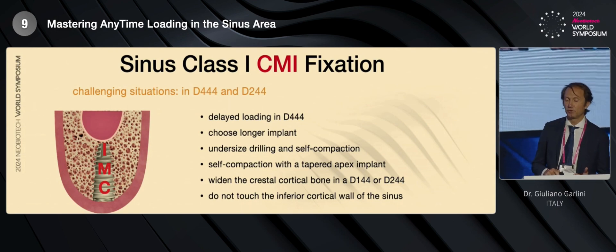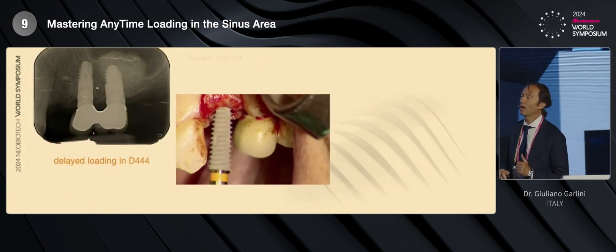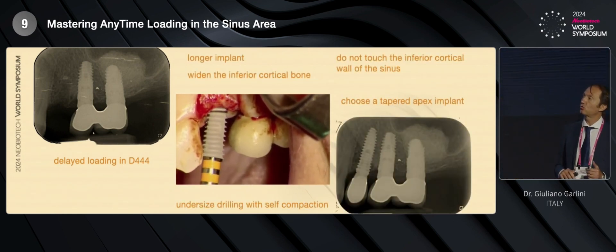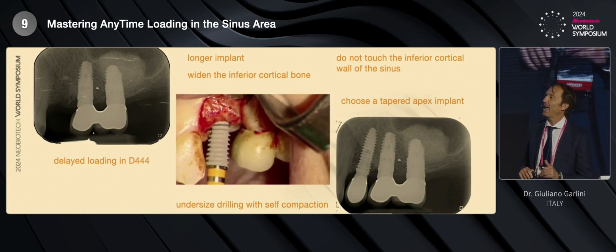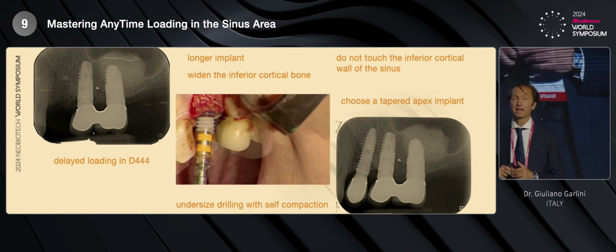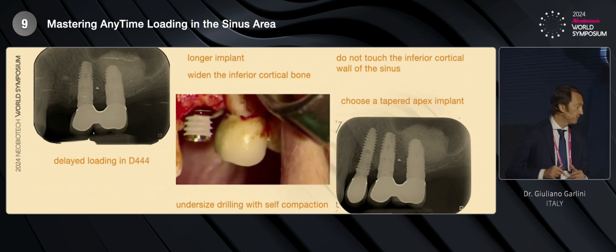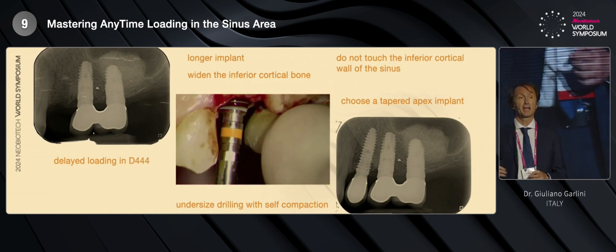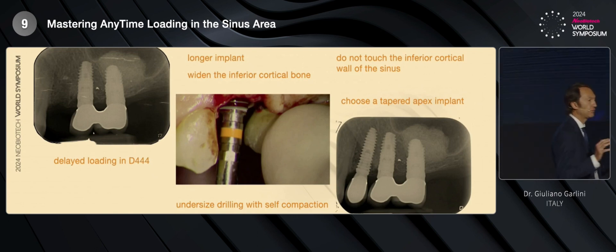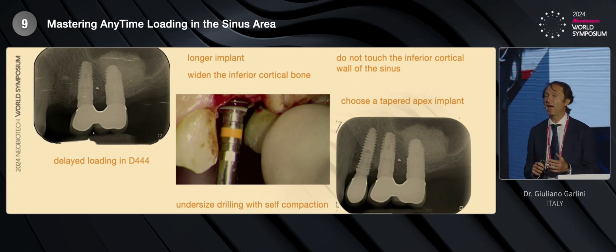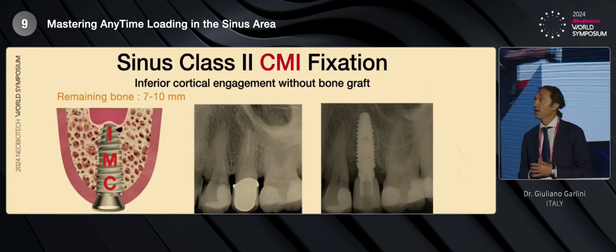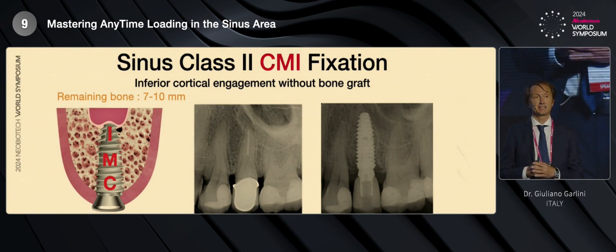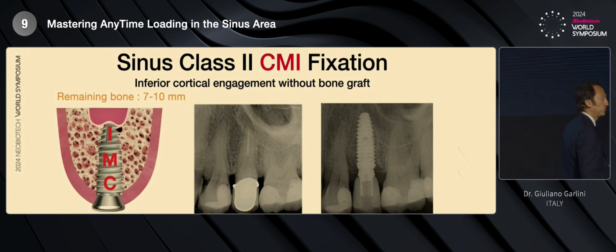So, as I told you before, this is not such an easy situation to treat with immediate loading, with any time loading. And for example, this premolar must be inserted into the premolar area which is already healed, and we have D44 bone — a very bad quality of bone. Now let's move to sinus class 2, CMI fixation. This is a better situation for the immediate loading, for the any time loading.